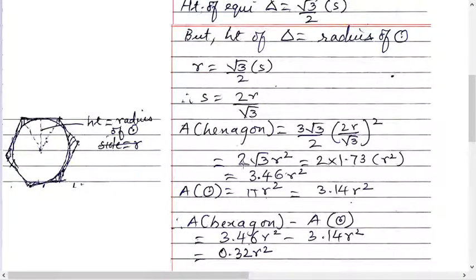Now you want the difference. Area of hexagon minus area of circle. So 3.46 times r square minus 3.14 times r square. It becomes 0.32 times r square.